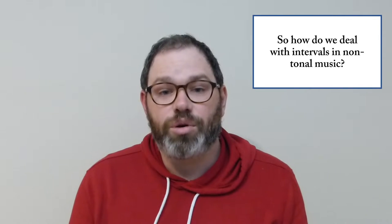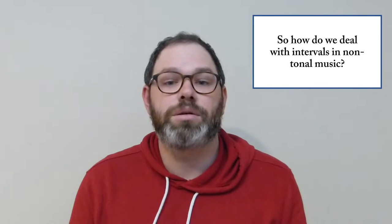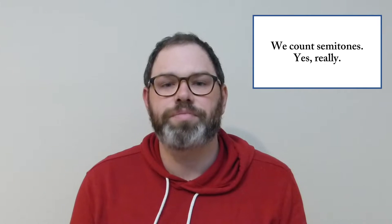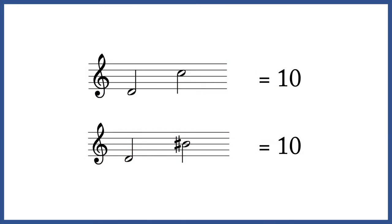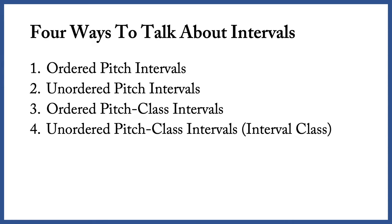So how do we deal with intervals in non-tonal music? We count semitones. Remember that minor seventh between D and C? Remember that augmented sixth between D and B sharp? In a non-tonal context, we're going to treat these as the same interval because they both contain 10 semitones. In post-tonal analysis, we have four ways to talk about intervals. A pitch interval can be any number of semitones, in an equal-tempered system anyway.